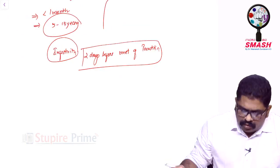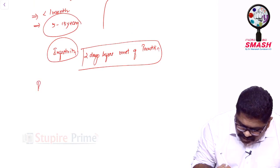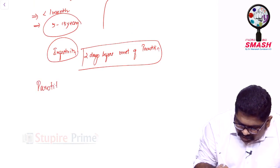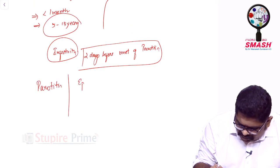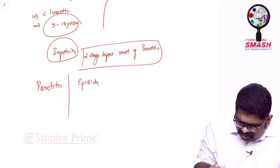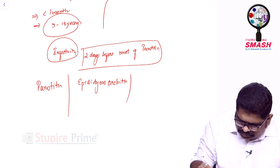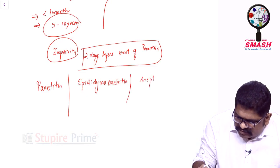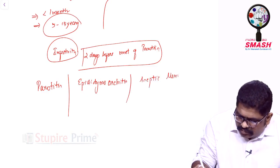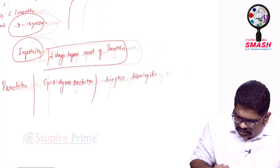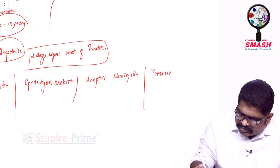What are the complications that can happen? In general, you have parotitis, epididymo-orchitis, aseptic meningitis, and pancreatitis.